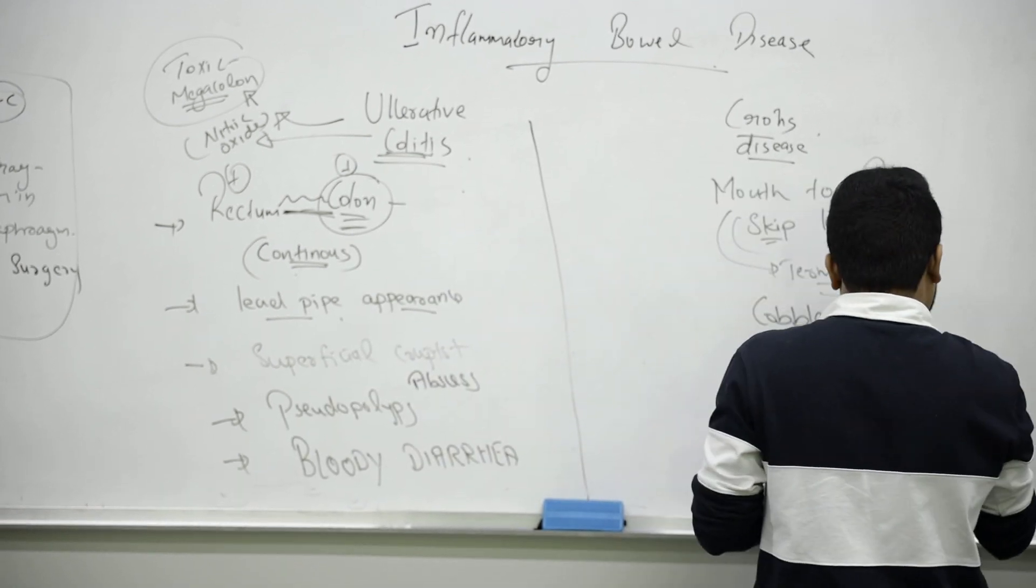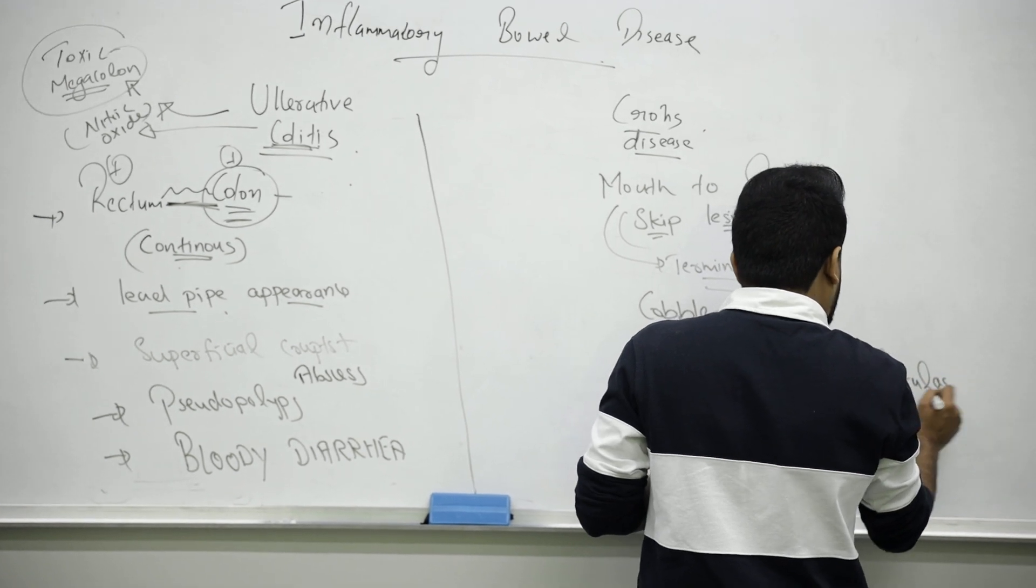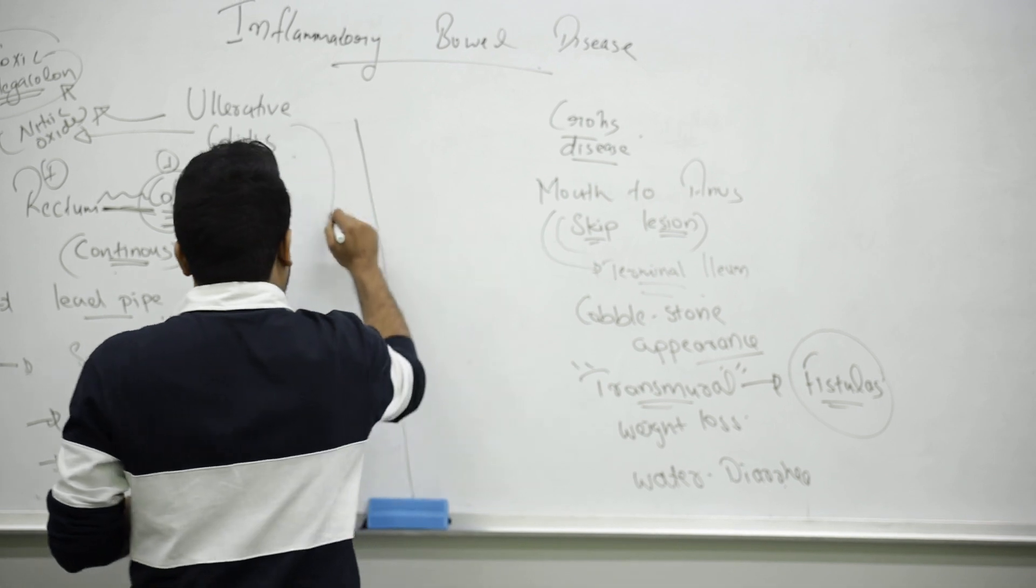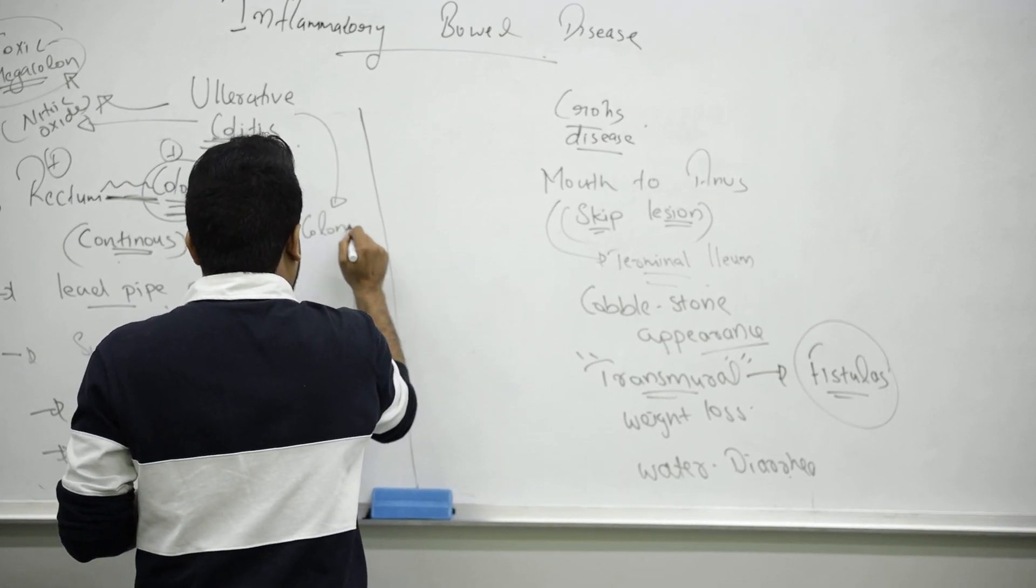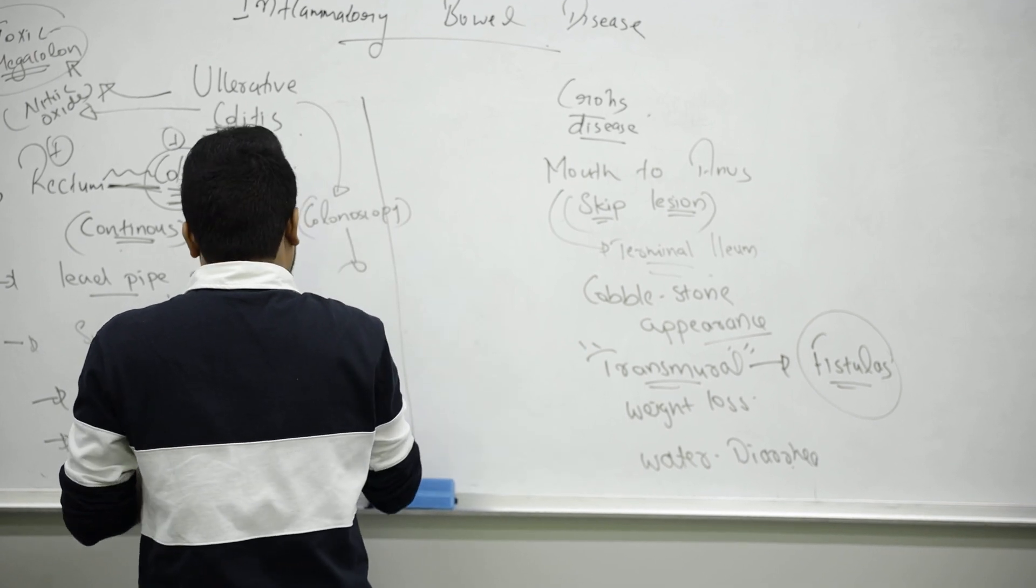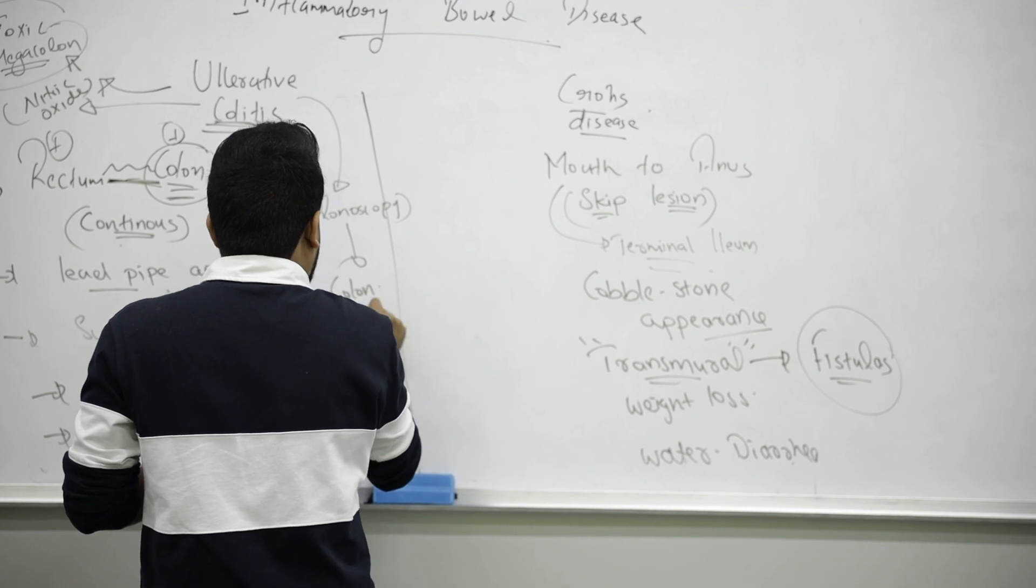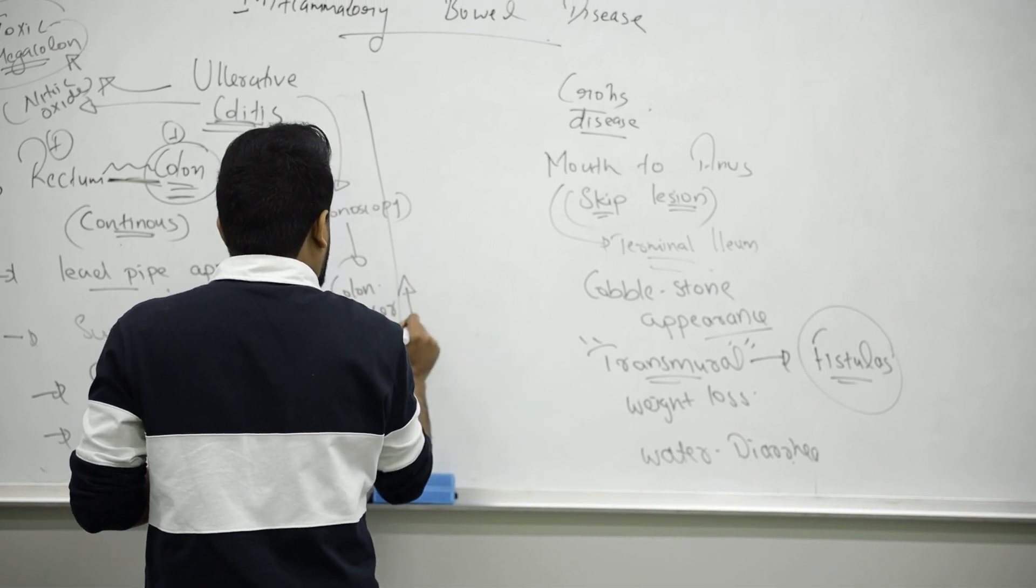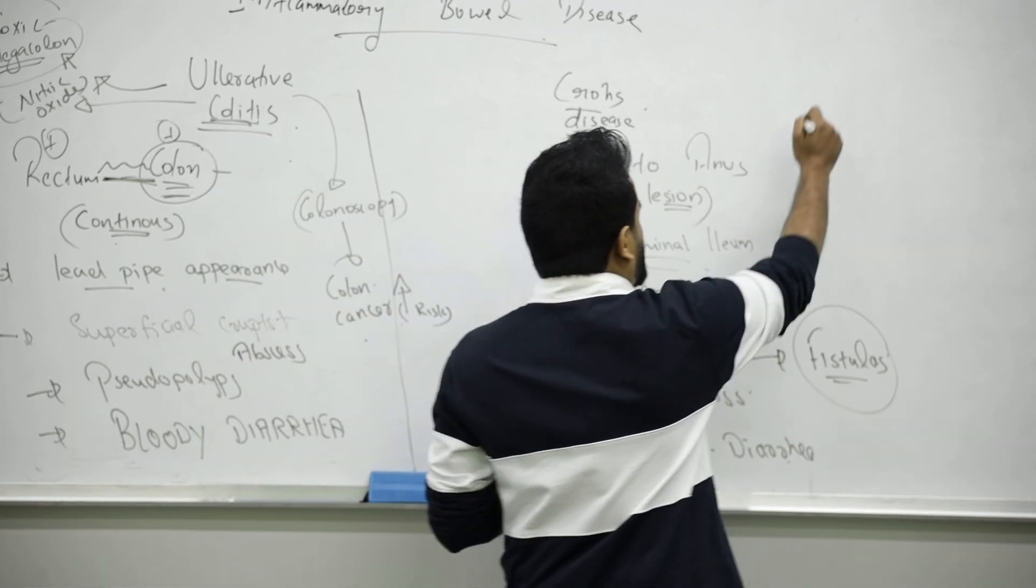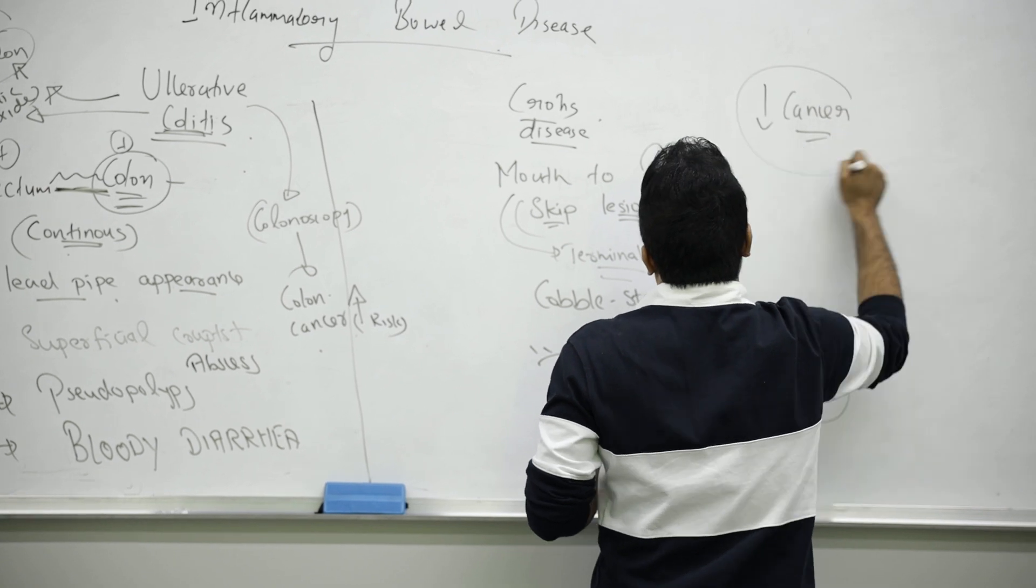If someone asks you the complication of Crohn's, suspect they will form fistulas because all the walls are affected. In ulcerative colitis, if you don't treat and don't do screening with colonoscopy, you must be very careful to rule out colon cancer, because in ulcerative colitis there is high risk of colon cancer. But cancer risk is low in Crohn's disease.